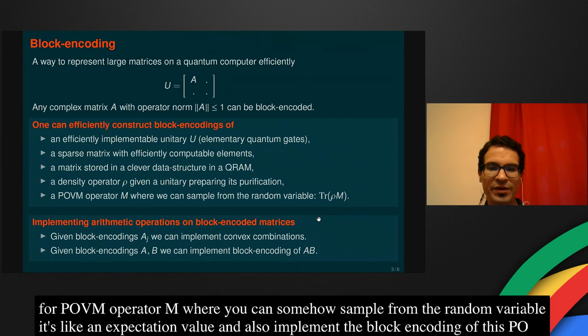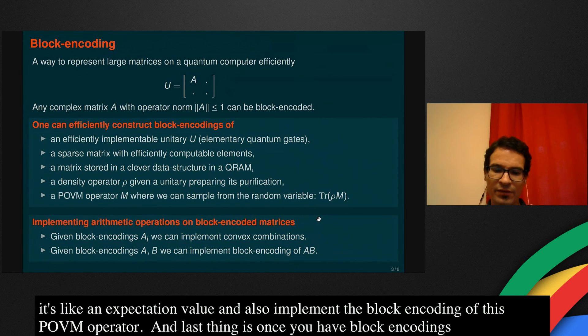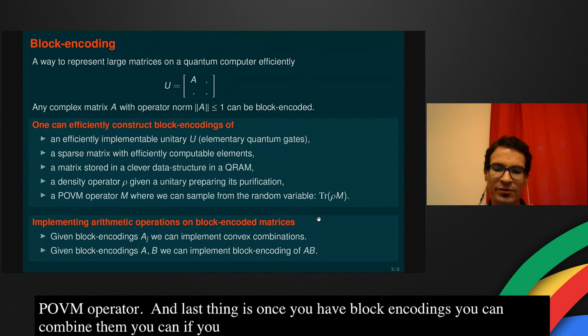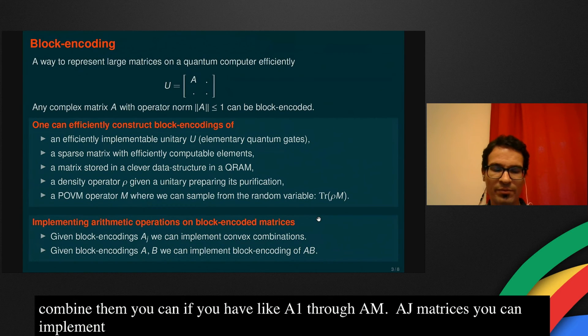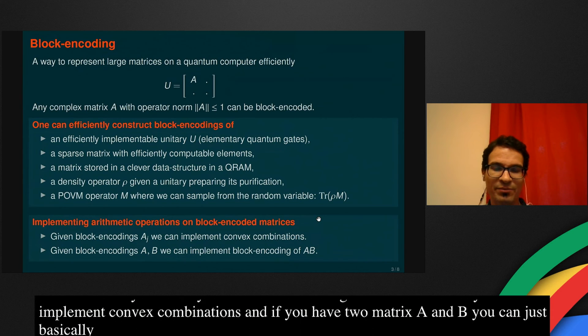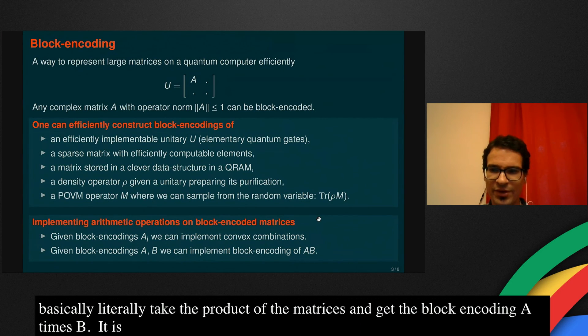The nice thing is that once you have block encodings, you can combine them. If you have A1 to AM, AJ matrices, then you can just implement convex combination of those. And if you have two matrices A and B, then you can basically literally take the product of the corresponding unitaries, and then you can get a block encoding of A times B. It's a little bit more complicated, but also it's still very simple.